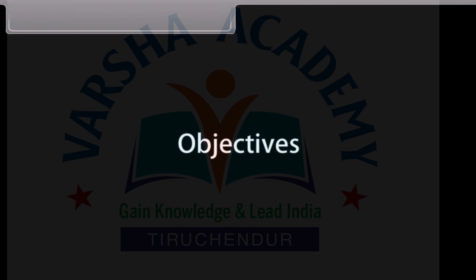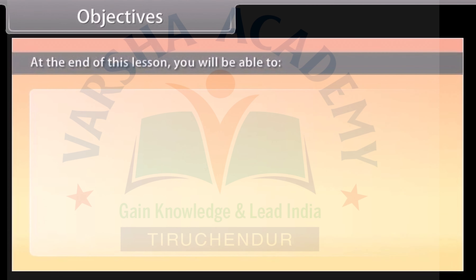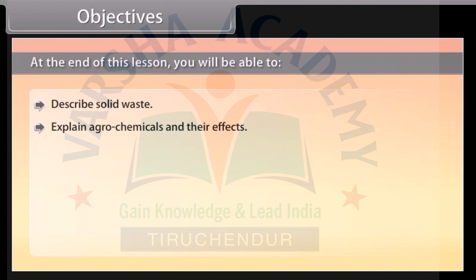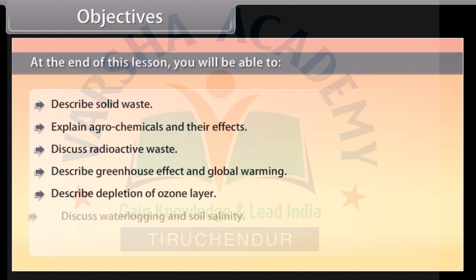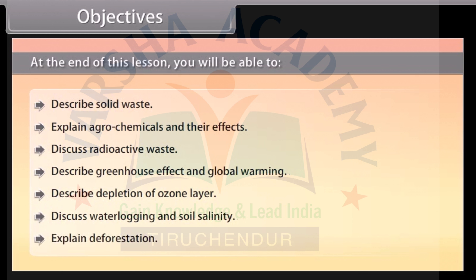Objectives: At the end of this lesson, you'll be able to describe solid waste, explain agrochemicals and their effects, discuss radioactive waste, describe greenhouse effect and global warming, describe depletion of ozone layer, discuss waterlogging and soil salinity, and explain deforestation.